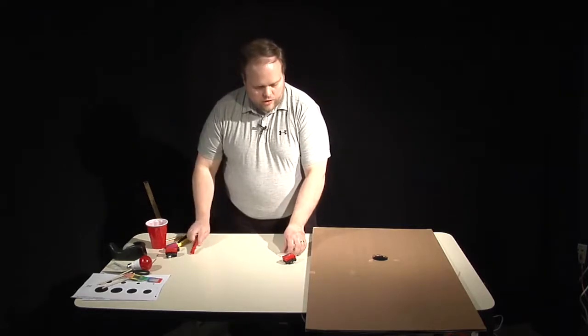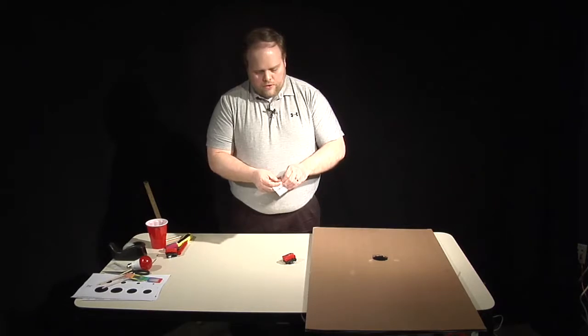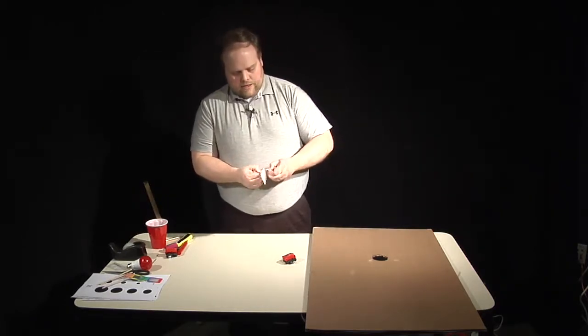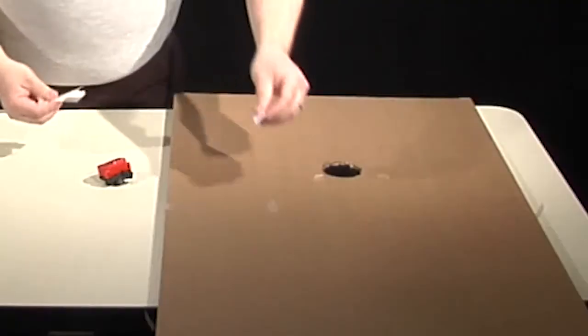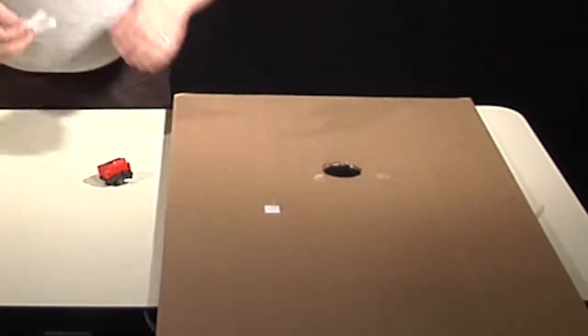We're going to take the Velcro so it attaches to the back of the board. We're going to put one piece right above the hole so the light can still shine through the hole.